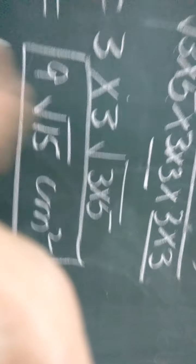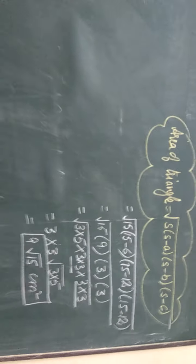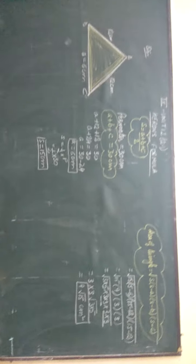So dear students, this is the answer. Therefore, the area of the triangle is 9 root 15 cm square. So dear students, in this way you can solve the question. I hope it is clear to you.